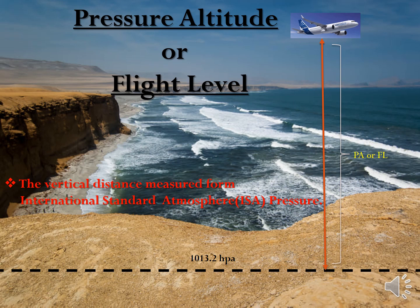Next is Pressure Altitude or Flight Level. Before that, you should know about ISA — the International Standard Atmosphere. The standard conditions are: temperature 15 degrees centigrade, pressure 1013.25 hectopascal, and density 1225 grams per meter cube. Pressure altitude and flight level are the same — the vertical distance measured from the International Standard Atmospheric pressure of 1013.25 hPa.